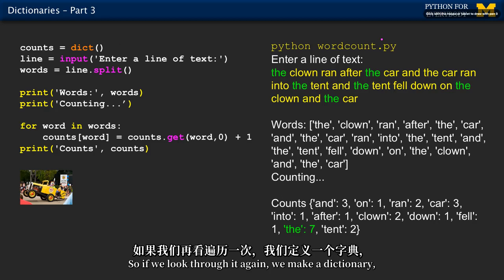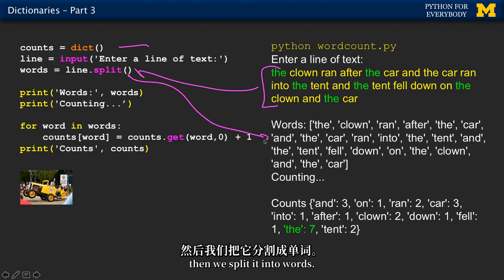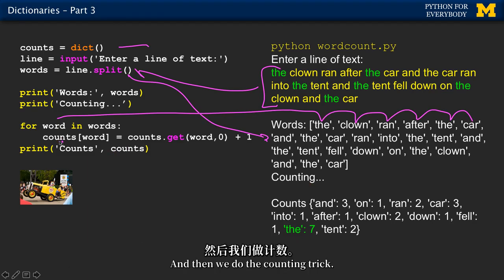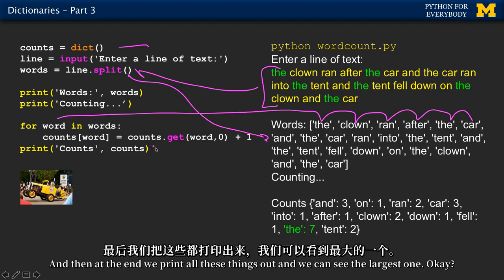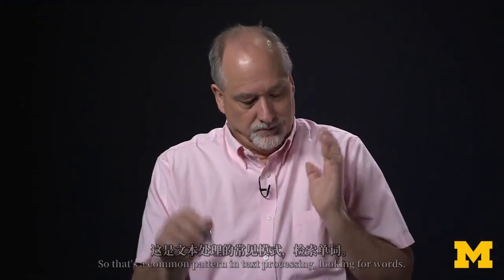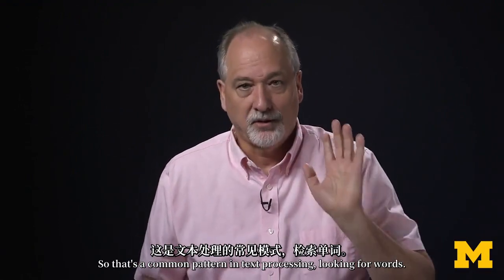So if we look through it again: we make a dictionary, we take this line of text and put it into this variable, then we split it into words. Then we have a word variable that iterates across all the words in the line, and we do the counting trick. At the end we print all these things out and we can see the largest one. That's a common pattern in text processing — looking for words.